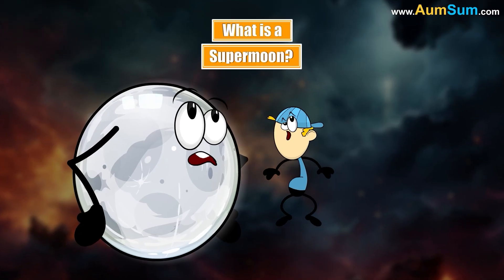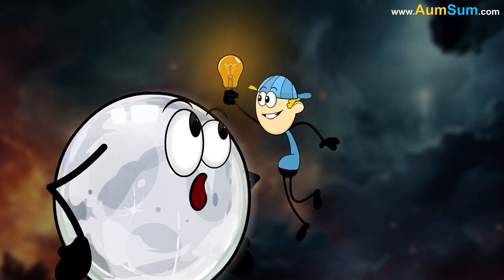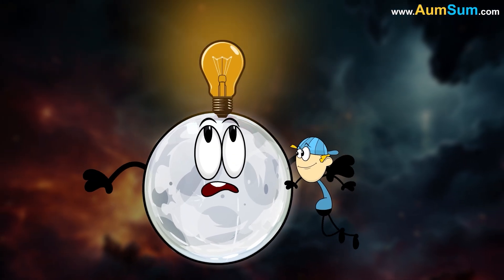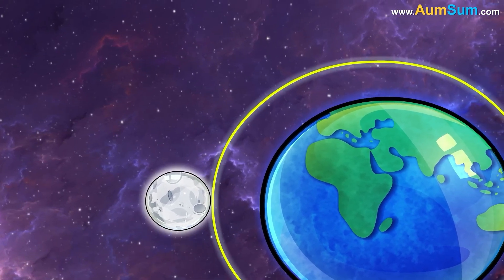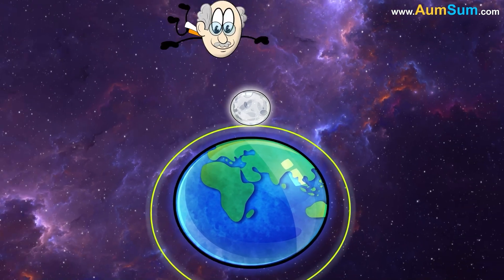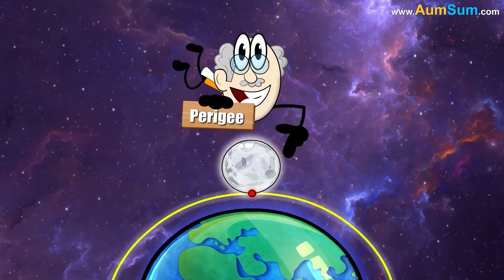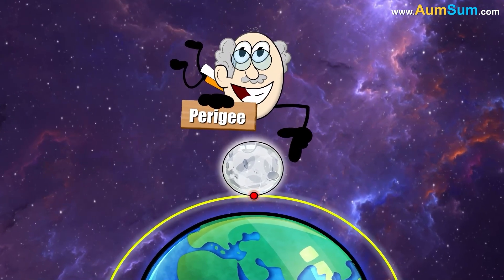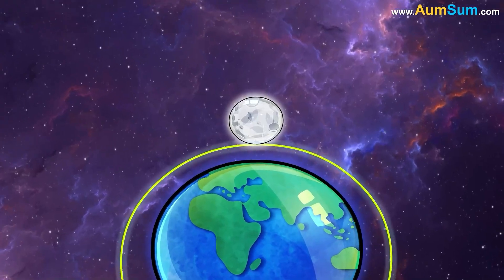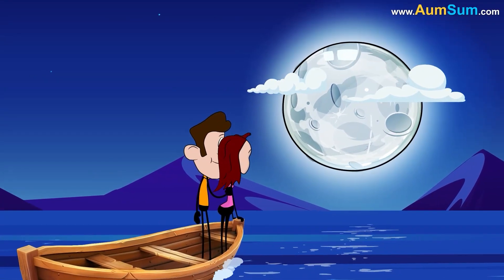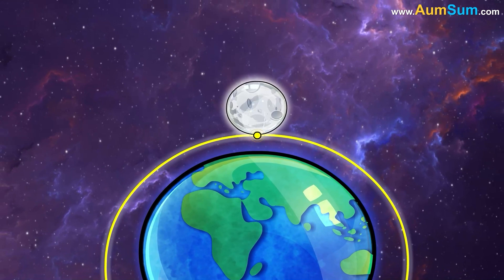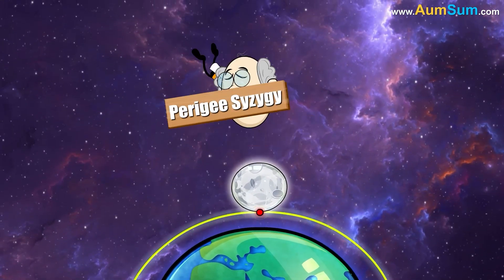What is a supermoon? Supermoon is a full or new moon that nearly coincides with perigee. Perigee is the moon's closest point to the Earth in its monthly orbit. This results in a moon which appears larger than its usual size when observed from Earth. The technical name for the same is perigee-syzygy, as in, roughly straight-line configuration of Earth, Moon, and the Sun.